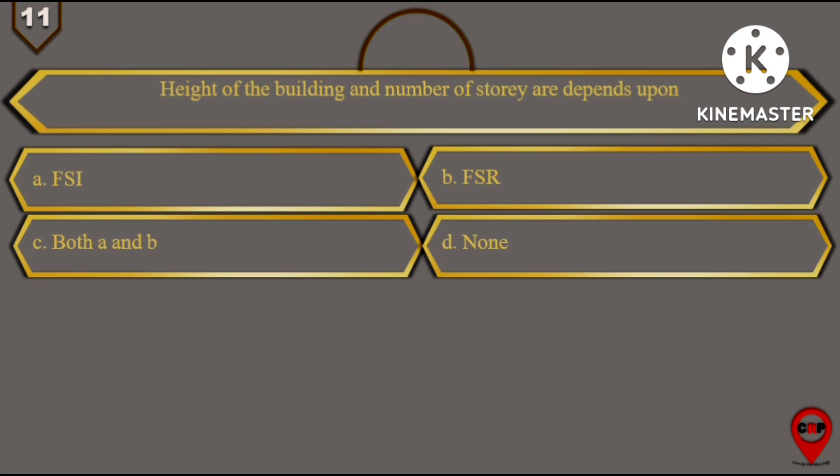And the right answer for this question number 11 is option number C, that is both A and B, FSI and FSR. Height of the building and number of storeys are depends upon FSI and FSR.